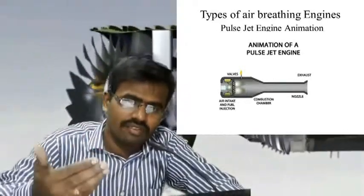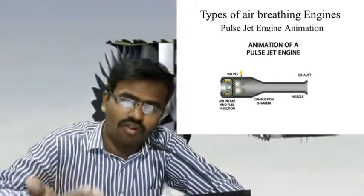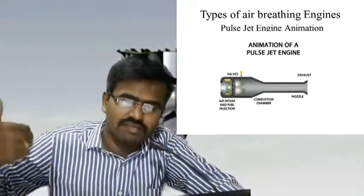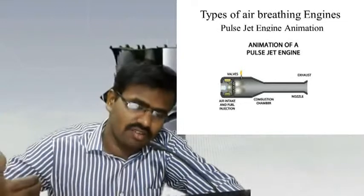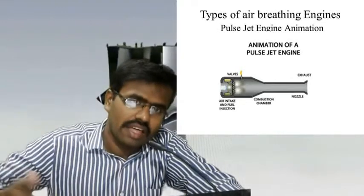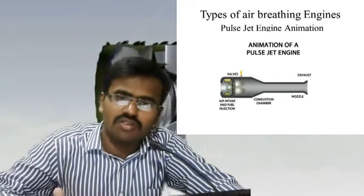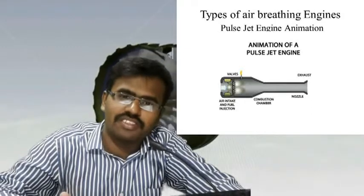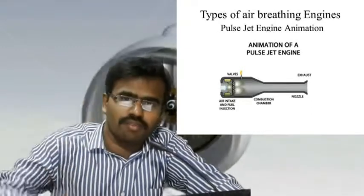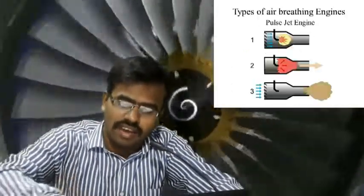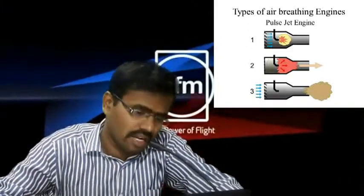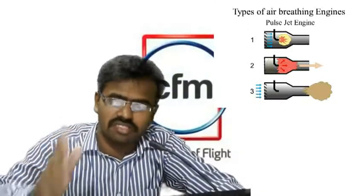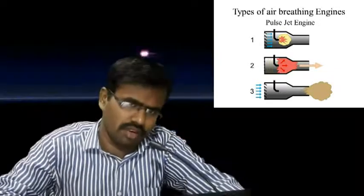Next, flue gas is produced and exhausted by means of an exhaust nozzle. At that time, pressure is reduced. When the pressure is reduced, the valve is kept open again and another cycle of air enters the combustion chamber. The cycle is then repeated. This is the working principle of the pulse jet engine.